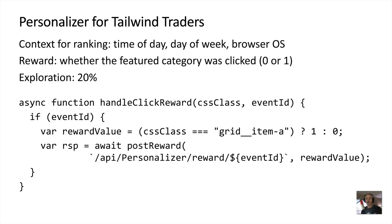In our Tailwind Traders app for anonymous users, we'll use time of day, day of week, and browser OS as context to influence our rankings. For the reward score, we'll use whether or not the hero section was clicked — a reward score of 1 if the featured category was clicked, and 0 otherwise. Over time the Personalizer will determine the best category to feature for anonymous users, and it will also explore 20% of the time, surfacing categories that would otherwise not be presented.